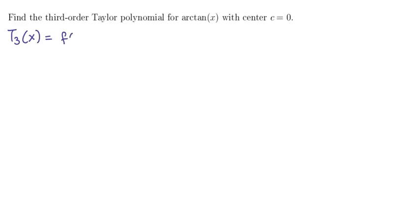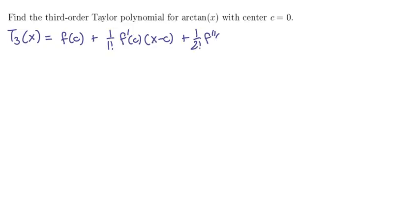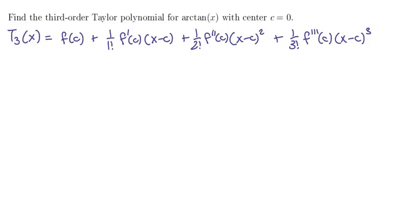That would be f of the center plus 1 over 1 factorial times f prime of the center times x minus the center, plus 1 over 2 factorial times f double prime at the center times x minus the center squared, plus 1 over 3 factorial f triple prime at the center times x minus the center cubed. And that's where we'll stop because we're looking for a third order approximation.